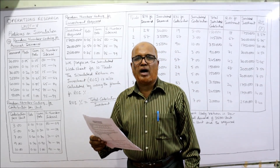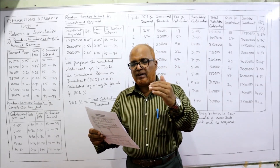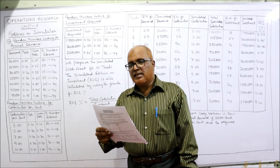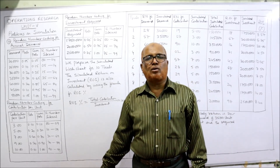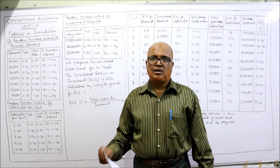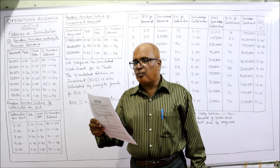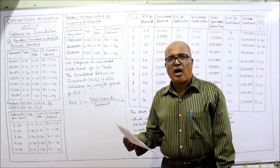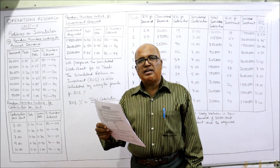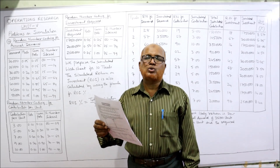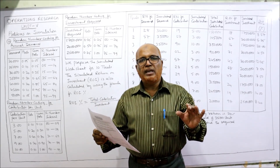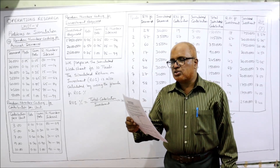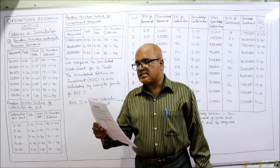We are given three factors: annual demand, contribution per unit, and investment required. Annual demand values are 20,000, 25,000, 30,000, 35,000, 40,000, 45,000, and 50,000 units, each with a given probability. Contribution per unit may be 3, 5, 7, 9, or 10 rupees, each with a given probability. Investment required is either 17 lakh 50 thousand, 20 lakh, or 25 lakh, each with a given probability. We need the random number interval for all three factors.